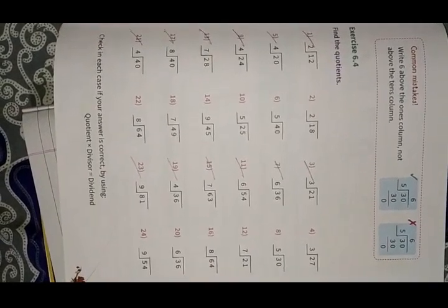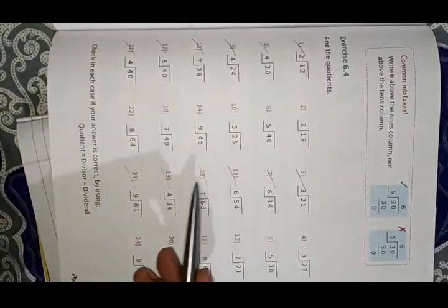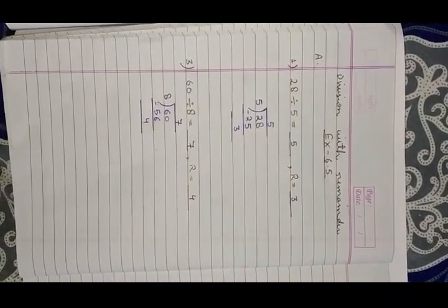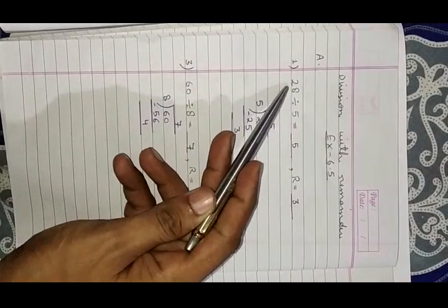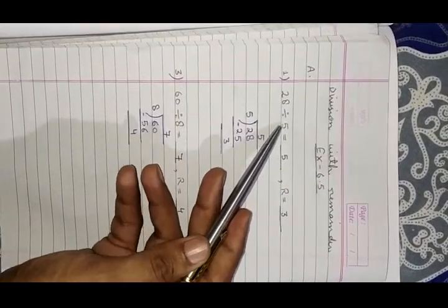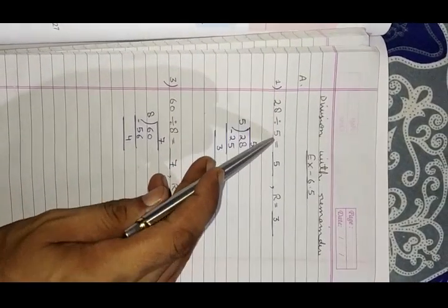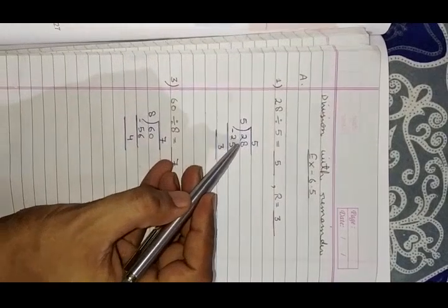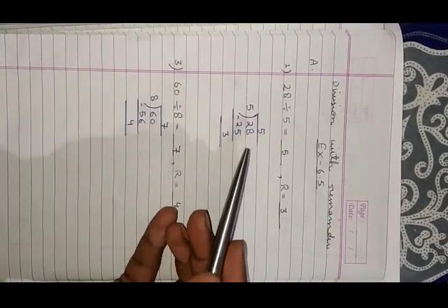In Exercise 6.4 there are 24 questions; you have to do only the odd ones, as marked in the book. Now, division with remainder in Exercise 6.5. In the last exercise the dividend was a multiple of the divisor, but here the dividend is not a multiple of the divisor, so it will not come exactly in the divisor's table.